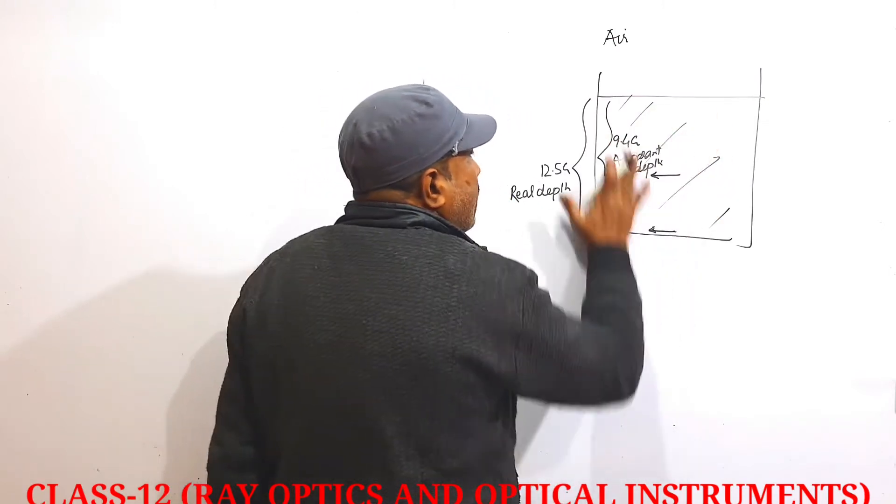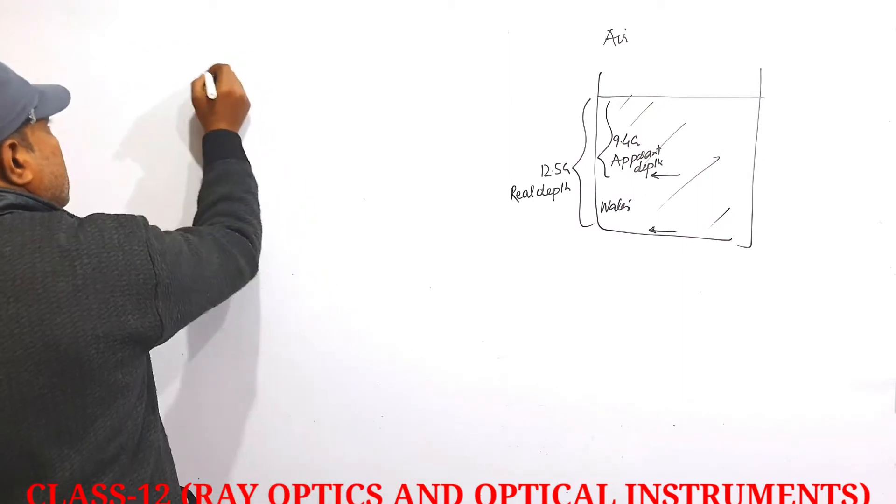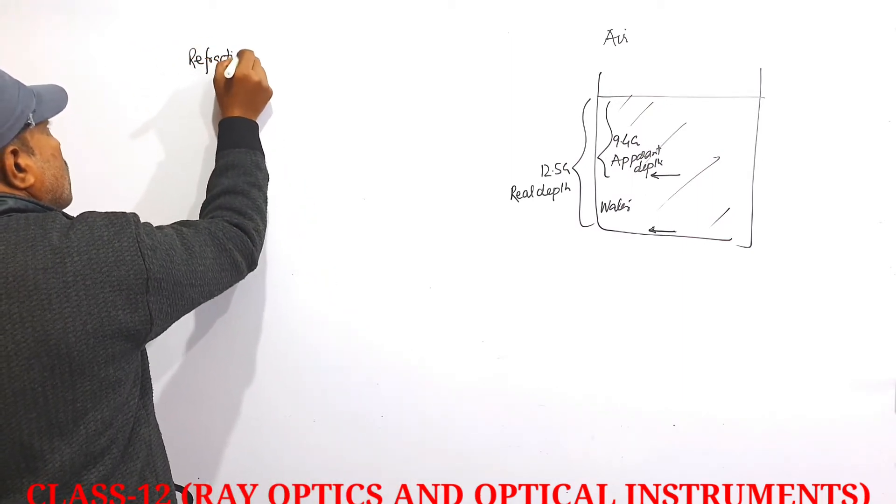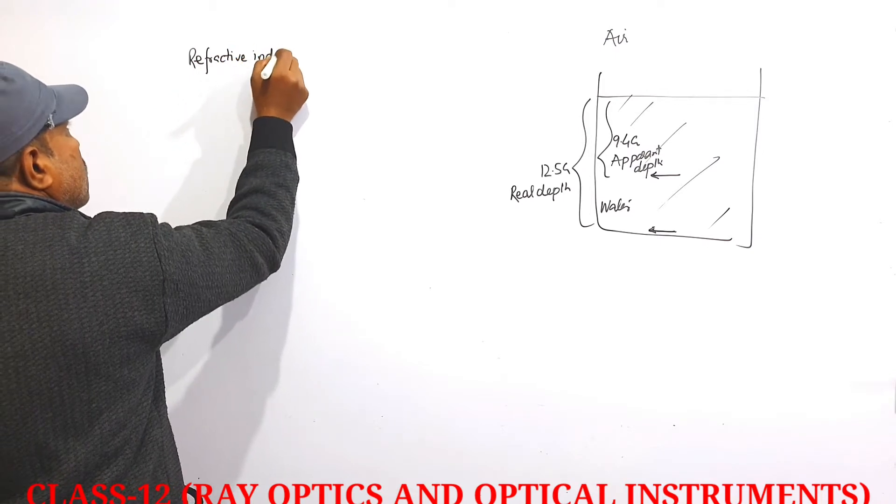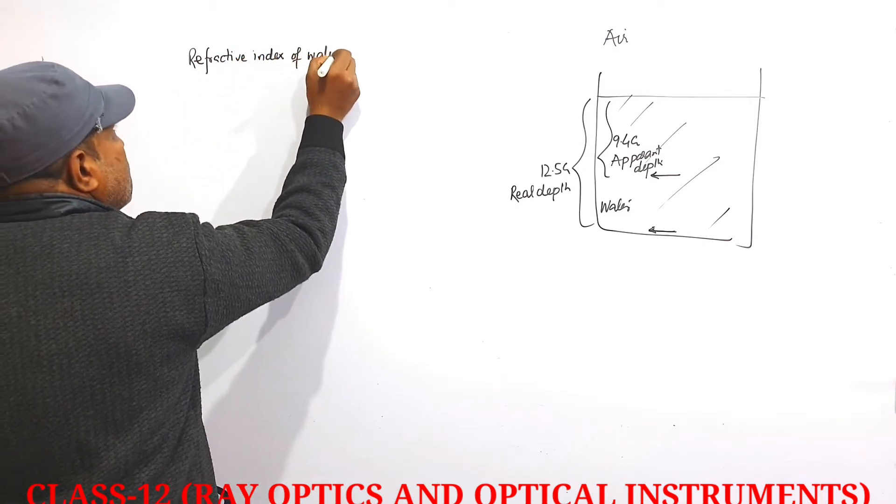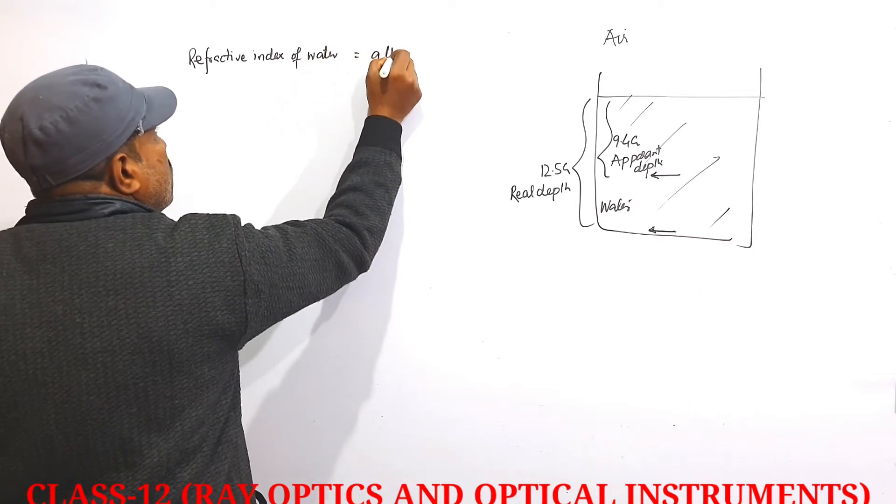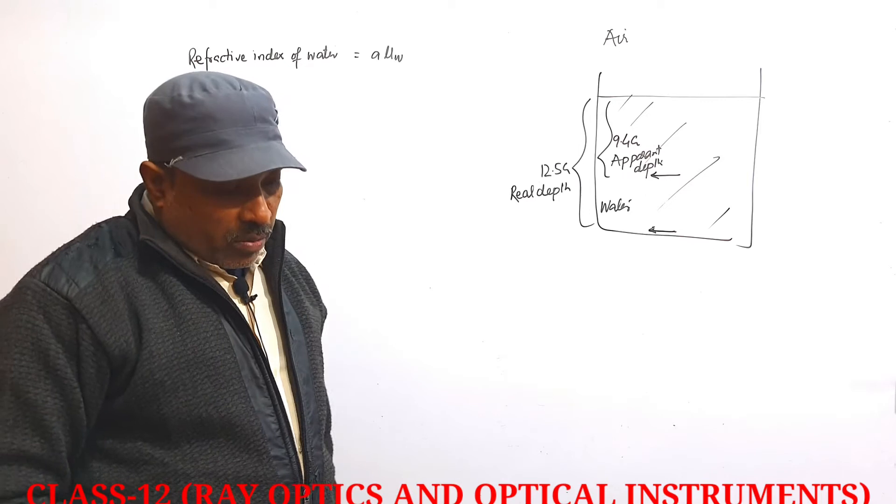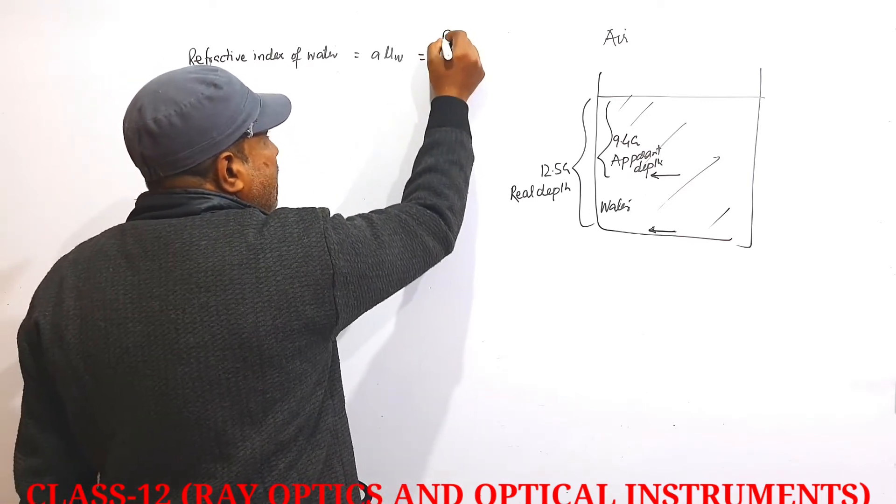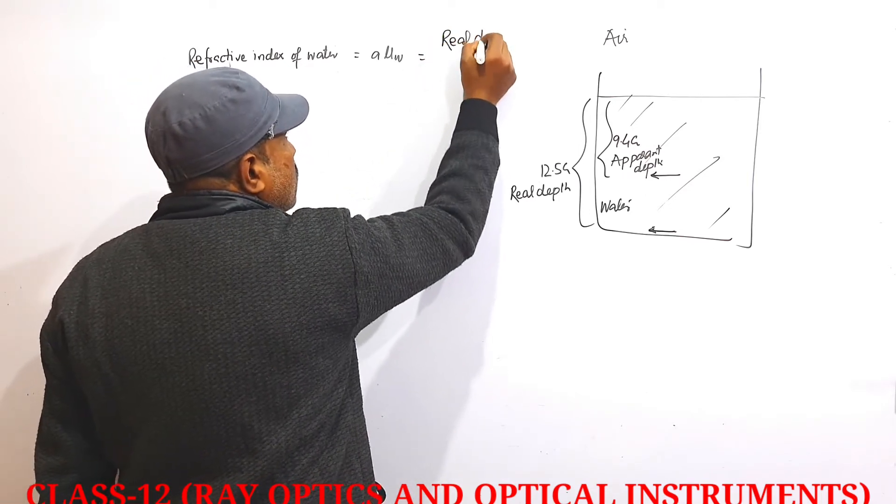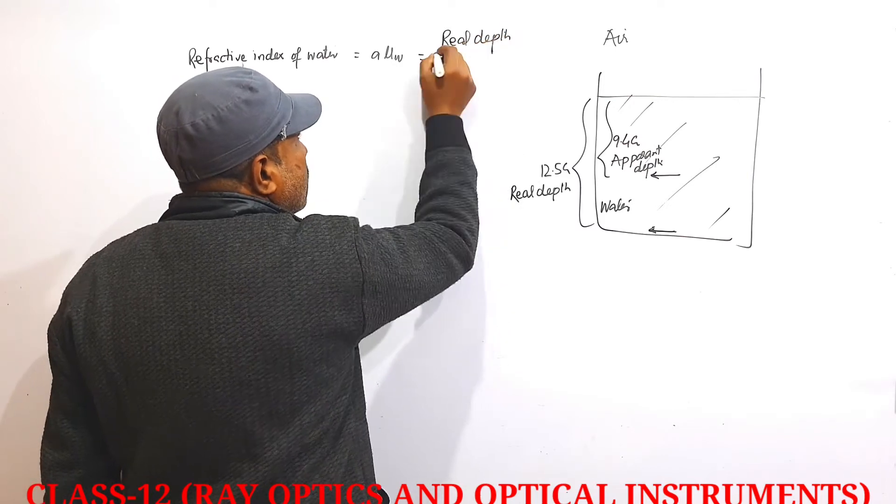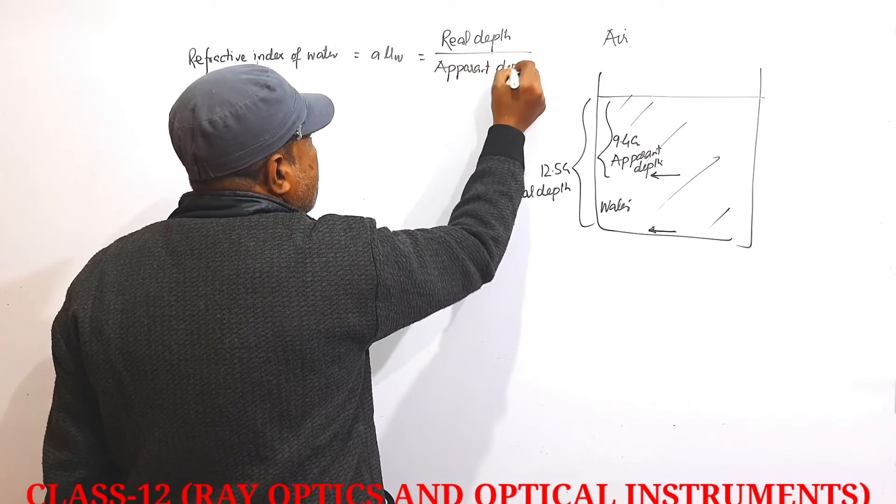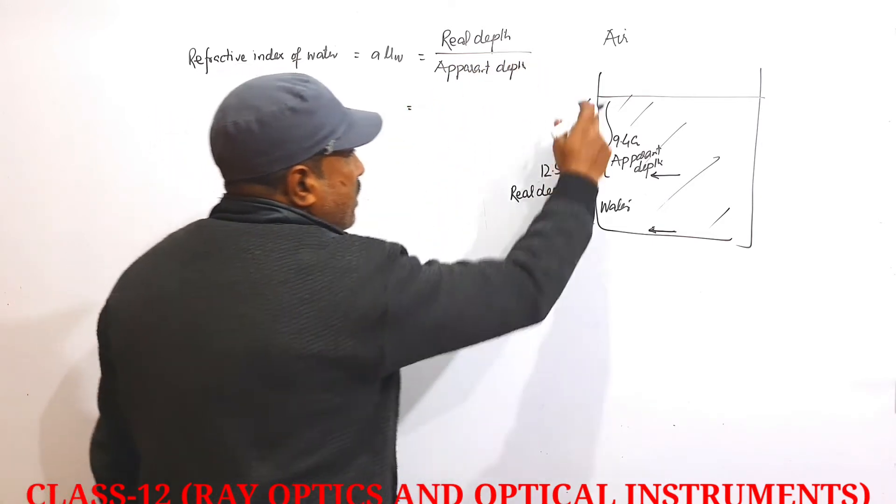Now if we want the refractive index of water, the refractive index of water with respect to air, the formula is: refractive index equals real depth divided by apparent depth.